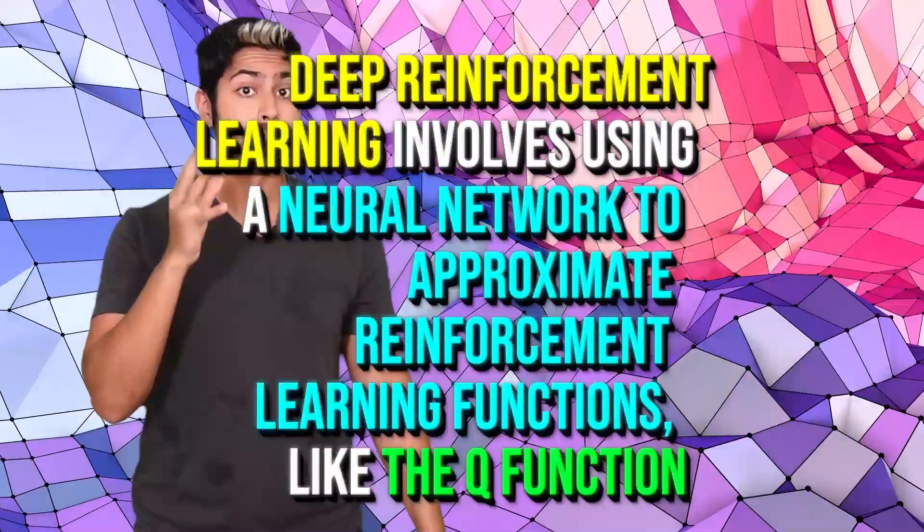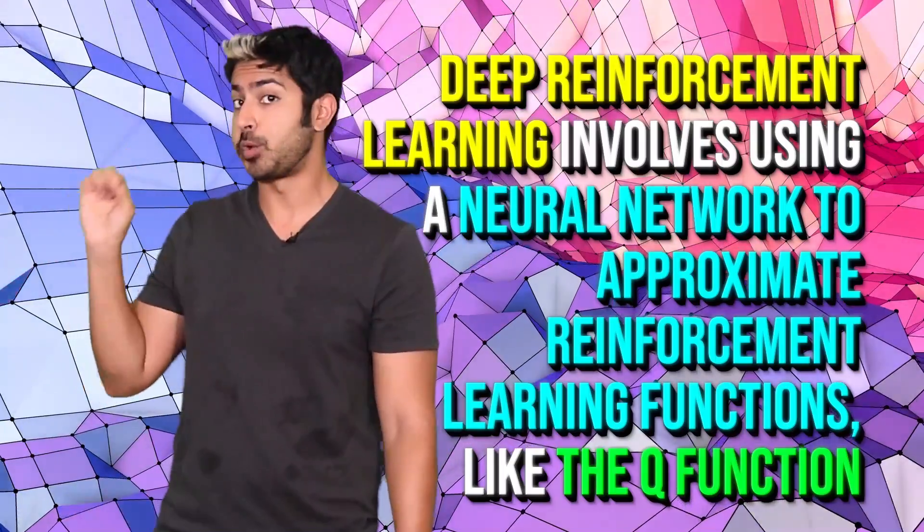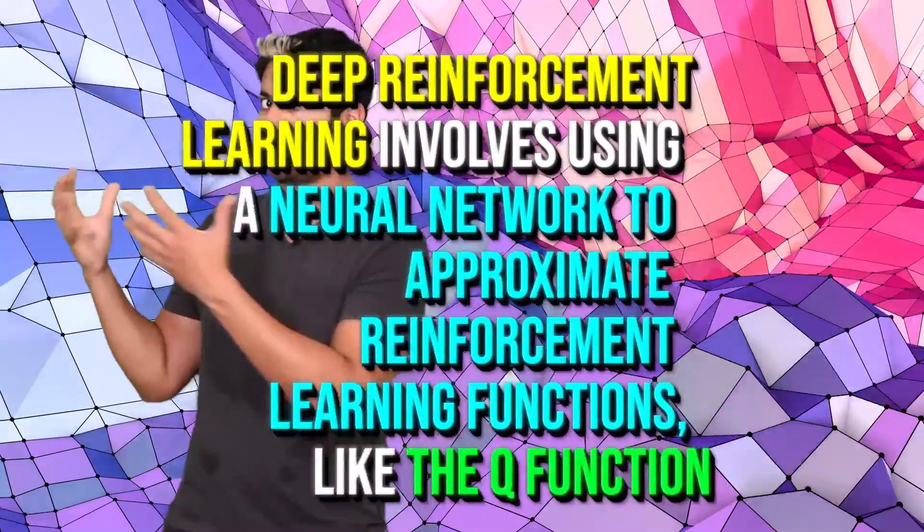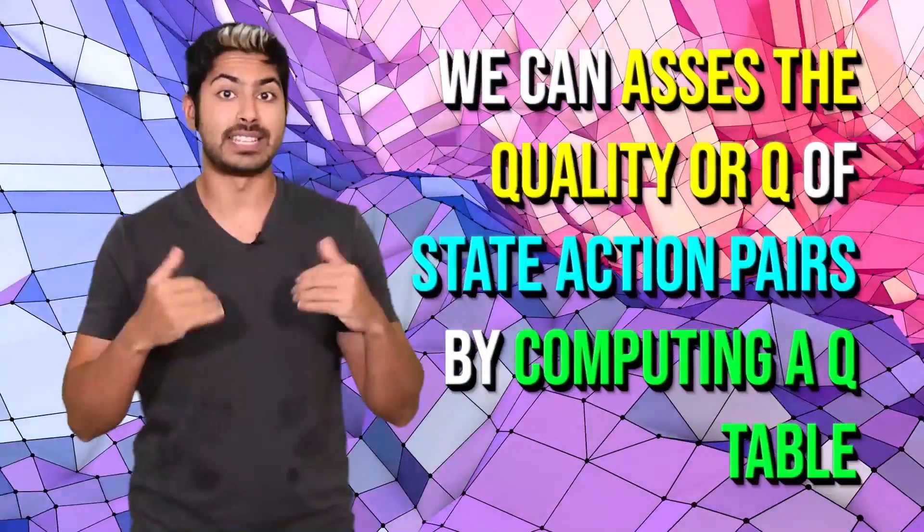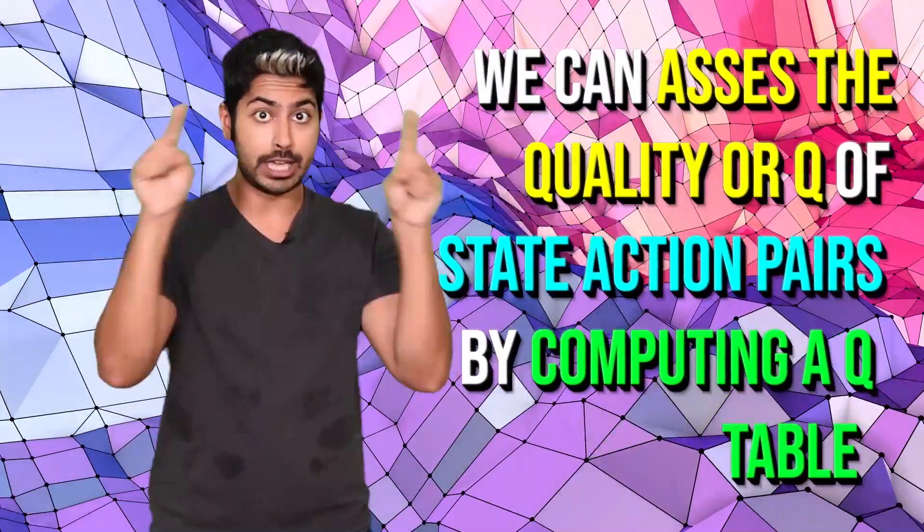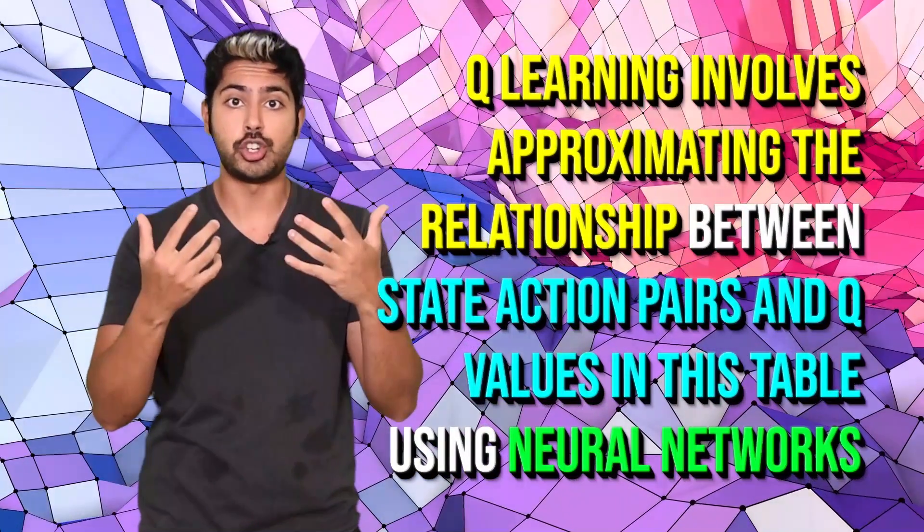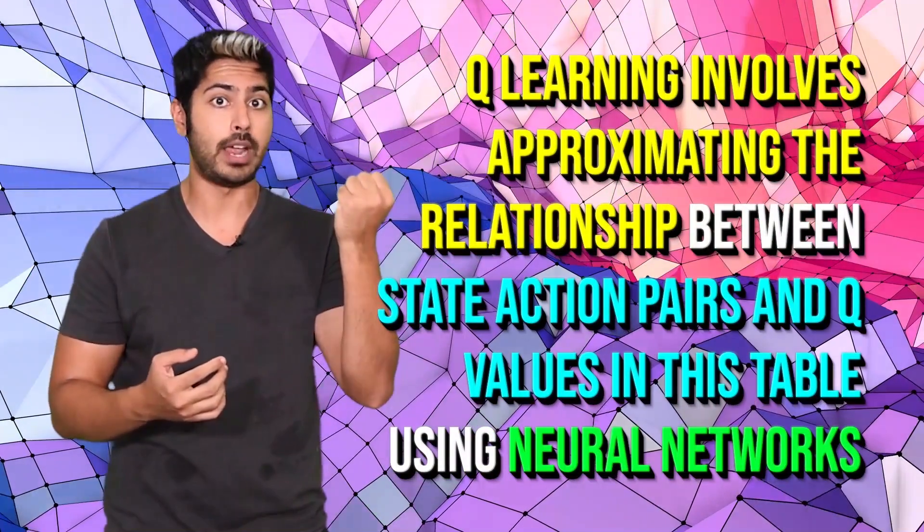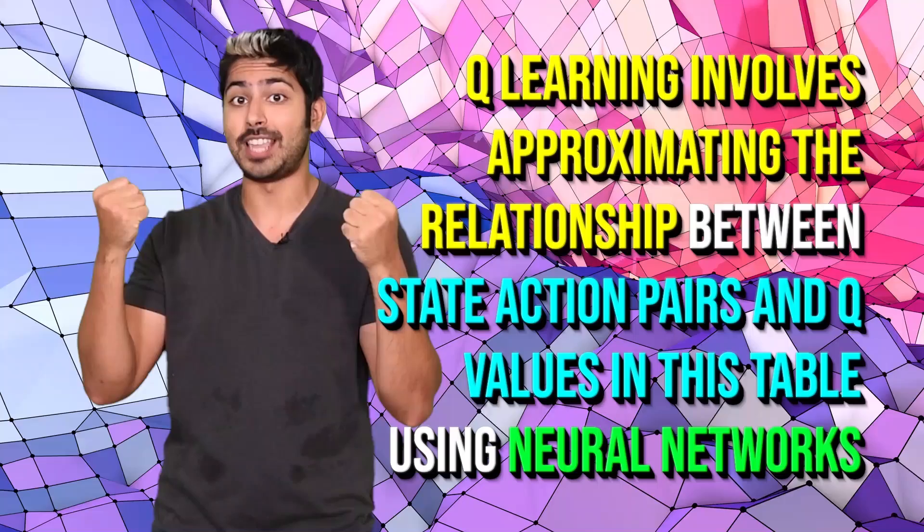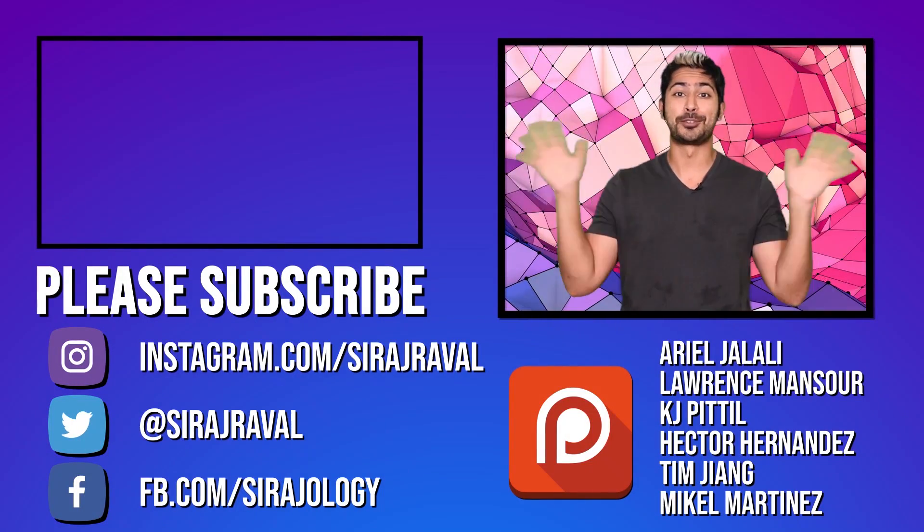Three points to remember from this video. Deep reinforcement learning involves using a neural network to approximate reinforcement learning functions, like the Q function. We can assess the quality, or Q, of state-action pairs by computing a Q table. And Q learning involves approximating the relationship between state-action pairs and Q values in this table using neural networks. And for now, I've got to take a meeting. So, thanks for watching.